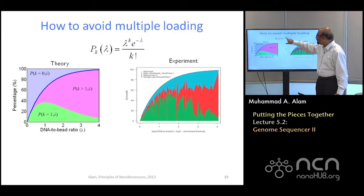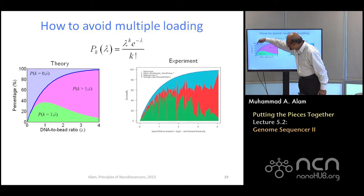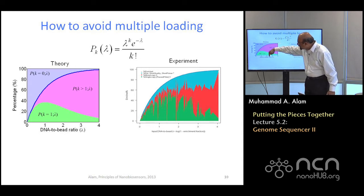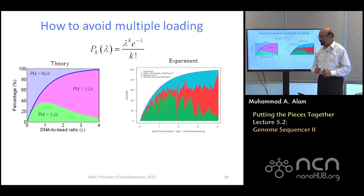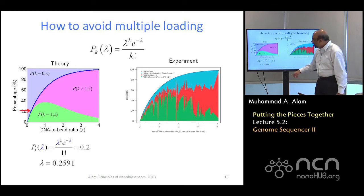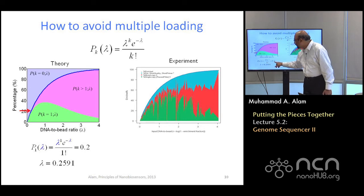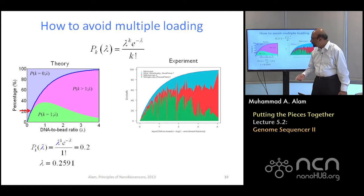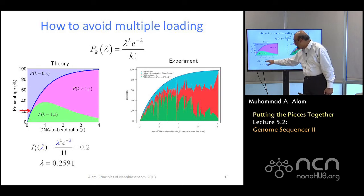It will exponentially die, because k equals 0 will give you 1 here, 1 here, and it will be e to the power lambda. So the curve I have not shown here will essentially decay as the DNA to bead ratio increases. So let's say you do not want more than one DNA per bead. How can you make that work? This is how it works.